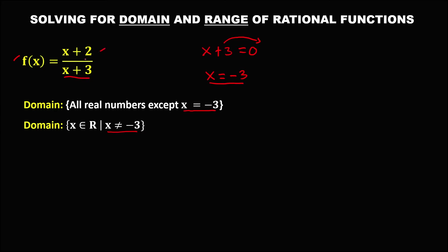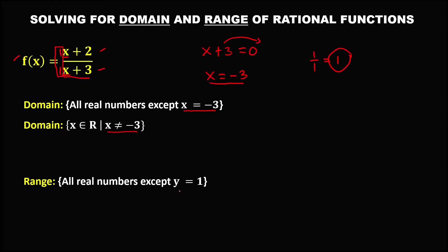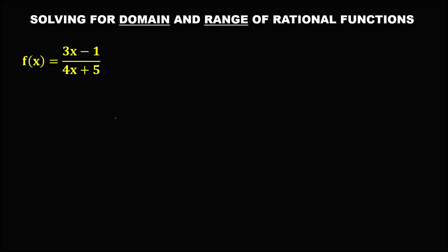observe that in the numerator we have x and in the denominator we also have x. To find the range, just take the numerical coefficients — that's 1 over 1, which equals 1. Therefore, the range is all real numbers except y equals positive 1, or y is an element of real numbers such that y is not equal to positive 1.